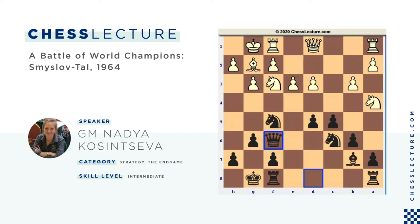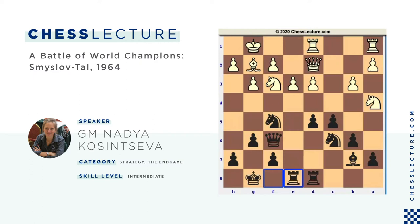Black proceeded with Qf6 — natural, moves everything out, tries to be closer to the center. White moved his queen to d2. Then Rad8, Rfd1, Re8, Rb1. Both players are setting up their rooks.